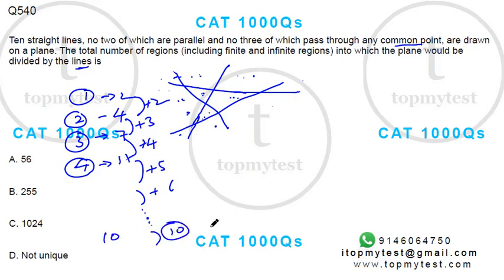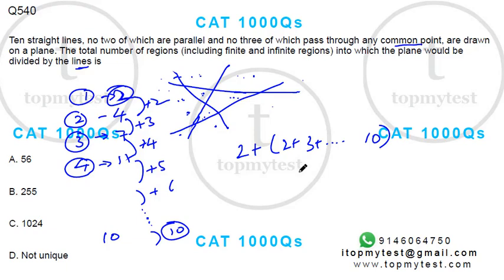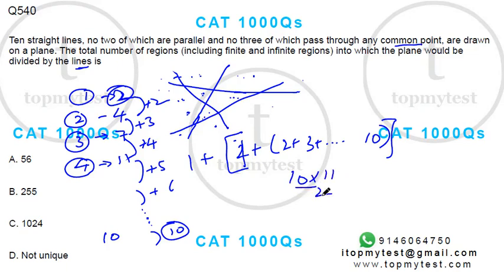The total number would be: your initial starting point is two, plus two plus three plus four and so on up to ten. Taking the one separately, this becomes 1 + (10 × 11 / 2) + 1 = 55 + 1 = 56. So 56 is your correct answer.